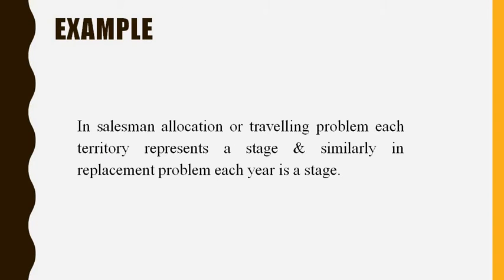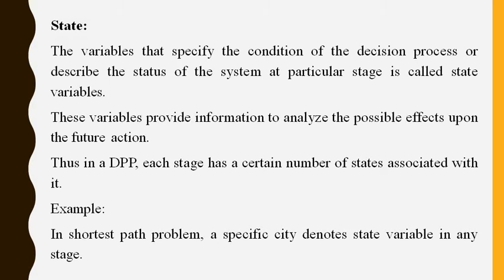For example, in a salesman allocation or travelling salesman problem, each territory represents a stage. Similarly, in a replacement problem, each year is a stage. The next term is state. The variables that specify the condition of the decision process or describe the status of the system at a particular stage are called state variables. These variables provide information to analyze the possible effects upon future action. Each stage has a certain number of states associated with it. For example, in a shortest path problem, a specific city denotes the state variable at any stage.